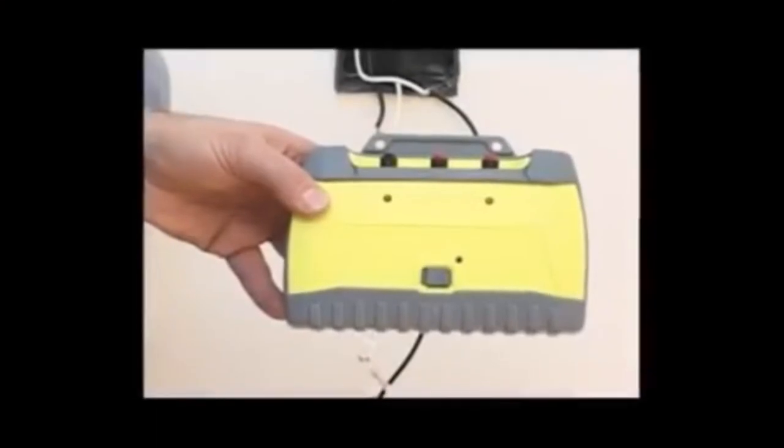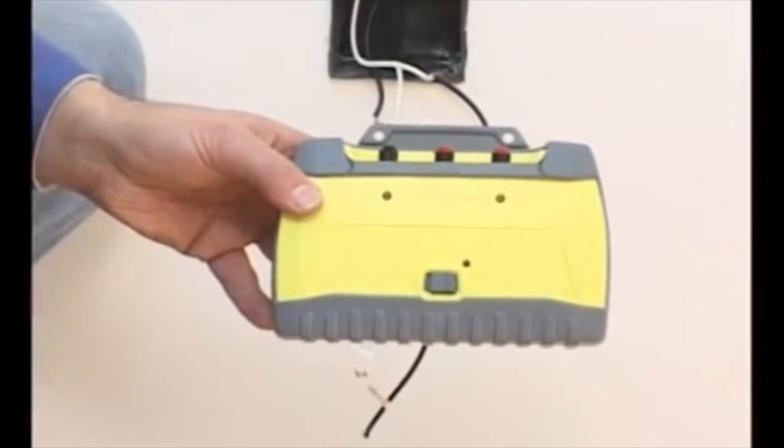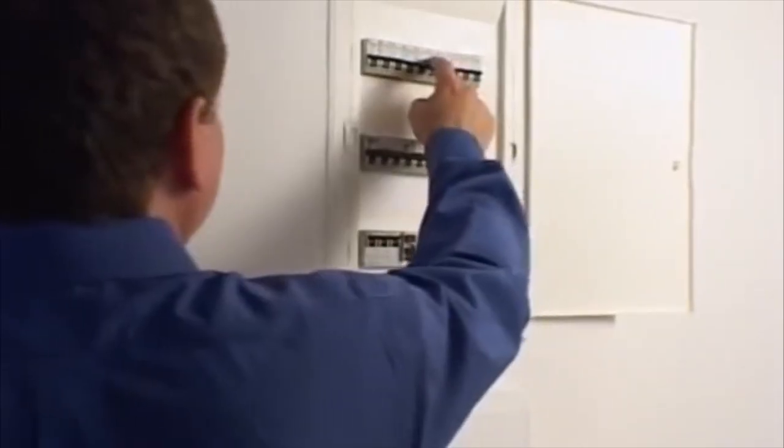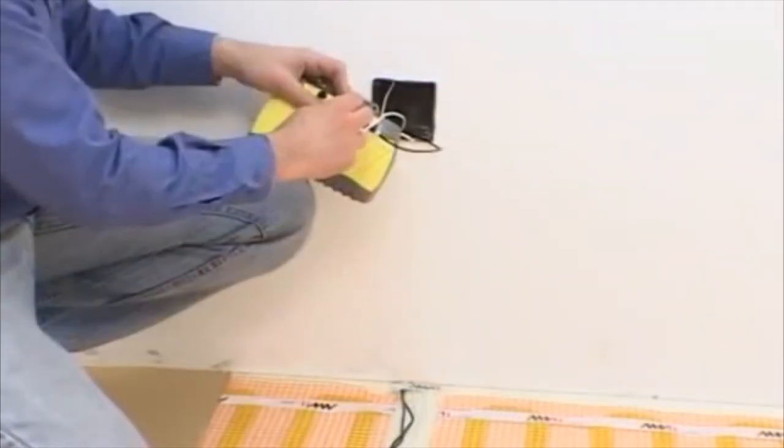If, during installation, you wish to ensure that there are no breaks in the circuit or any incorrect connections, use the AHT Screamer Connection Monitor. Disconnect the mats from the electricity supply and then connect the Screamer according to the instructions on the device.